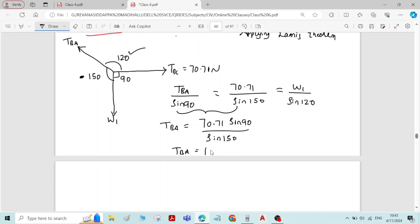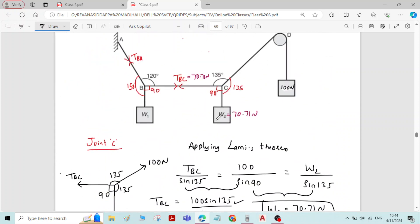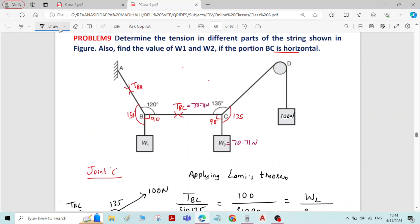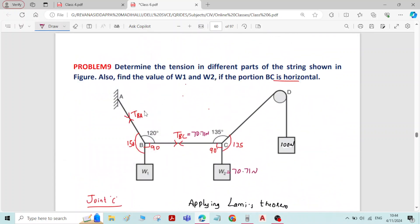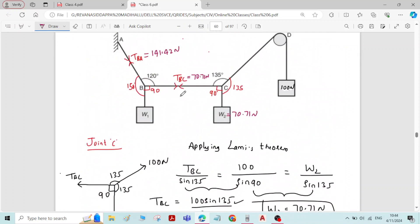For this answer is TBA is equal to 141.42 Newton. And W1 we got it as 122.47 Newton. So to this we have determined W1, W2, force in BA, BC and CD. TBA is 141.42 Newton and W1 is 122.47 Newton.